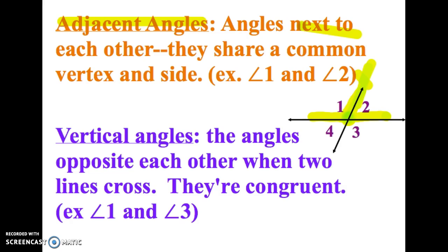Vertical angles, those are angles that are opposite each other when two lines cross, and they're congruent. So for example, in this case, we see angle one and angle three. Those are vertical angles, they're opposite each other when these two lines cross. And congruent, that just means they're exactly the same size.